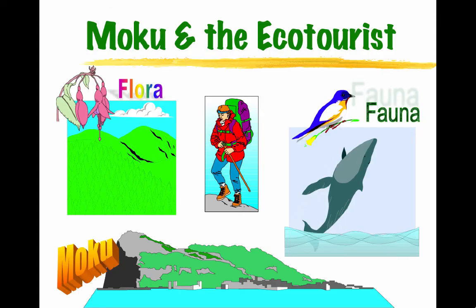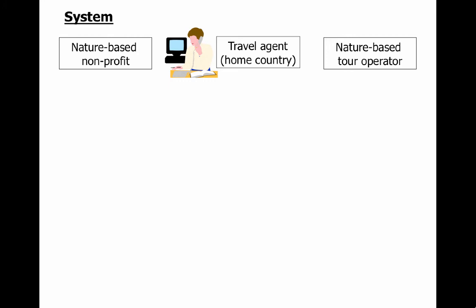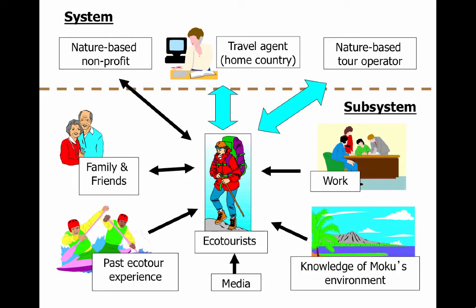Next we have a systems analysis that doesn't exist as a single organization — it's a system across numerous organizations. It involves an island called Moku, an alias for the real place, and ecotourists and their impact on the flora and fauna of the system. At the system level, we have nature-based non-profits, travel agents in the home country, and nature-based tour operators. In the subsystem, we have the ecotourist in the center, impacted by media, their work, knowledge of the environment, ecotour experience, and family and friends with two-way communication. The greatest communication will be with their own travel agent and nature-based tour operator.